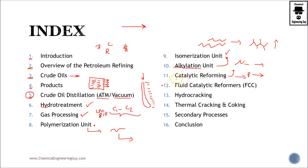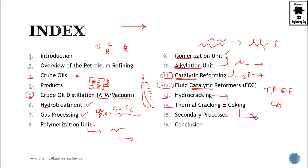Catalytic reforming covers most of the chemistry, and FCC also covers the chemistry behind these operations. These are important units because they contain catalysts — we want to know the operating temperatures, pressures, feed rates, and most importantly, the type of catalyst being used. Hydro cracking, as the name implies, breaks molecules into shorter chains. Thermal cracking and coking deal with residual materials, where we still want to extract something of value from the residual cuts.